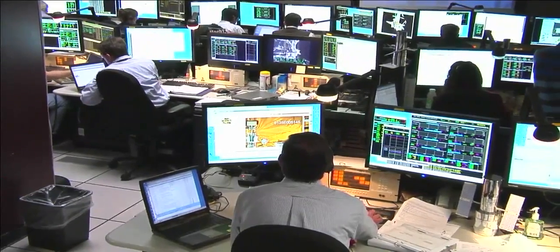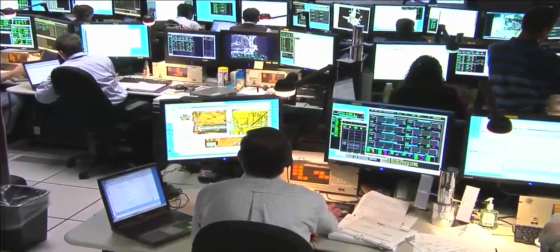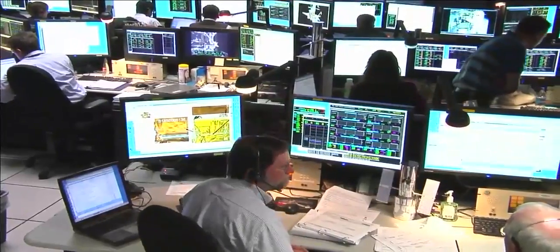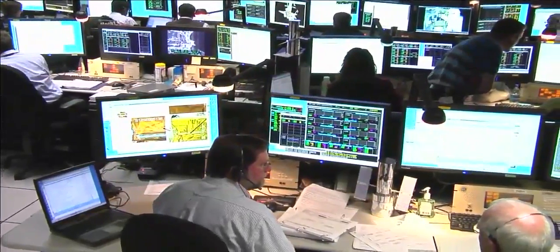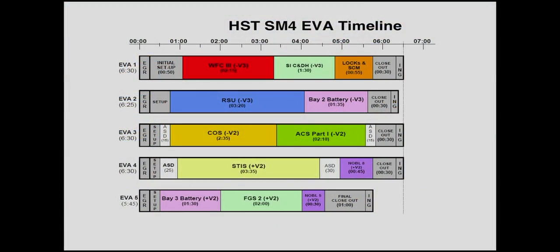With Hubble now on its work stand, the telescope is ready for five consecutive days of hands on work by pairs of spacewalking astronauts. Beginning tomorrow morning, the astronauts will install the first of the two new science instruments and replace a command and data unit. The following chart gives a graphic representation of all the planned new hardware that is planned to be installed on Hubble.